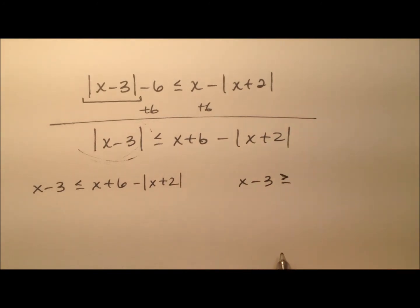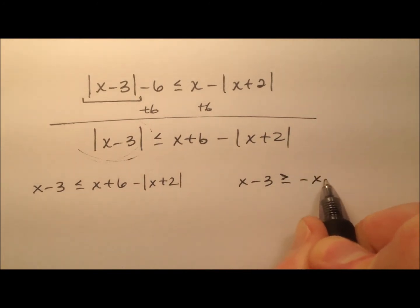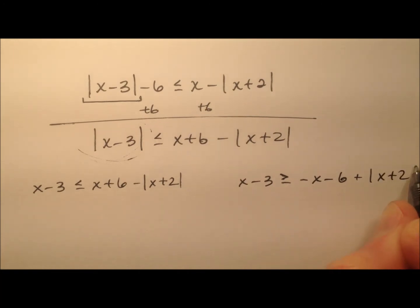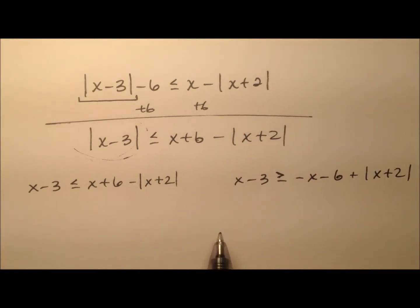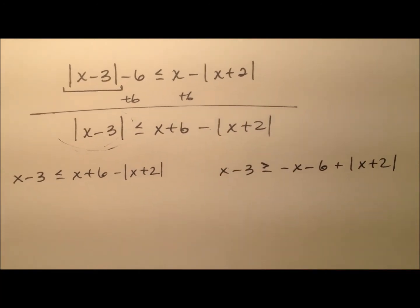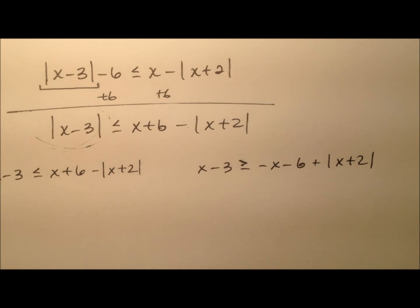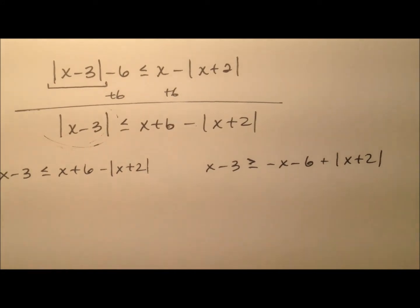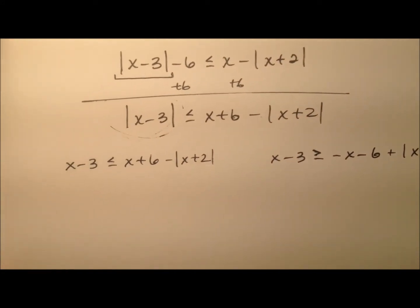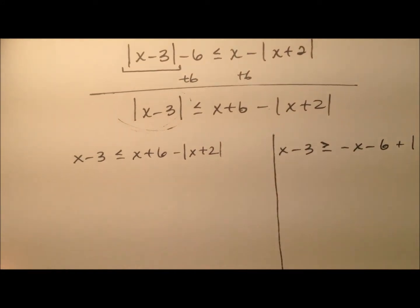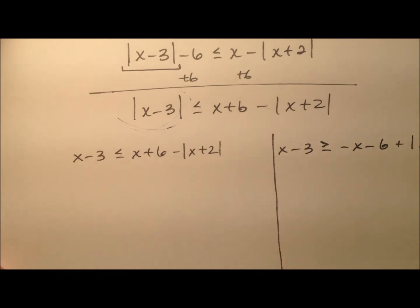So greater than or equal to negative x minus six plus the absolute value, because we just changed that sign from a negative to a positive. Let's go ahead and solve each one of these independently, and we'll start with the first one.